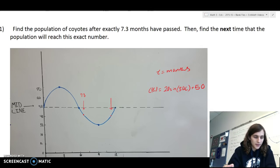Alright, so problem one is find the population of coyotes after exactly 7.3 months have passed. Then, find the next time that the population will reach this exact number.